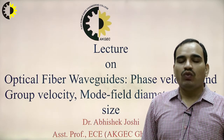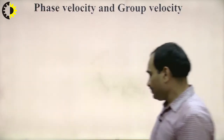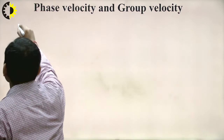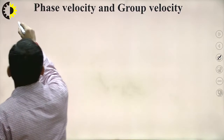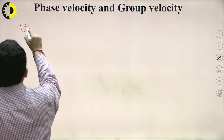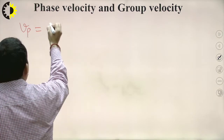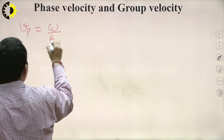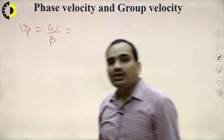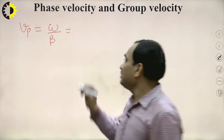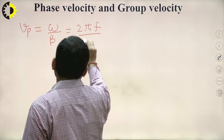Let us discuss what is phase velocity. Phase velocity is given by Vp, and the formula for phase velocity is omega by beta. We know that omega is nothing but 2 pi f by beta.